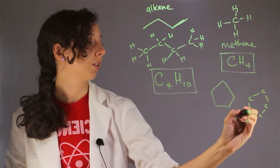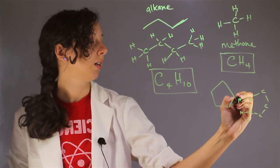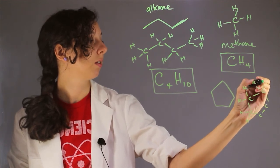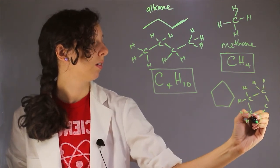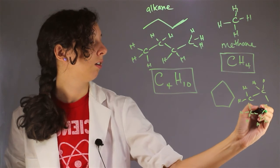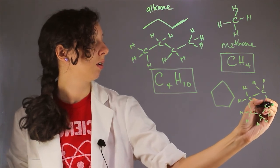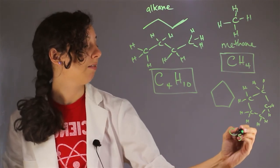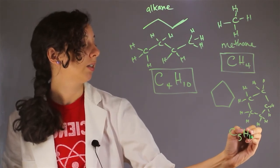and each carbon is going to have two hydrogens. This is called cyclopentane. We have five carbons, and we have two hydrogens on all of those carbons. So our chemical formula is C5H10.